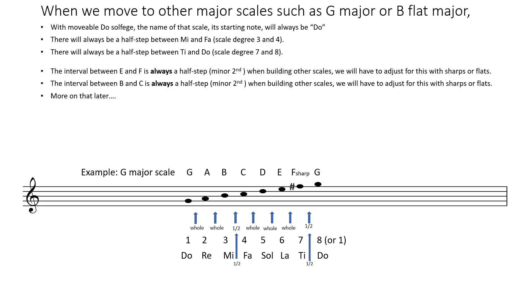The interval between E and F on the piano keyboard and in notation is always a half step, minor second. When building other scales, we will then have to adjust for this with sharps or flats.